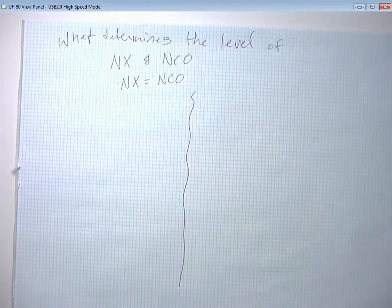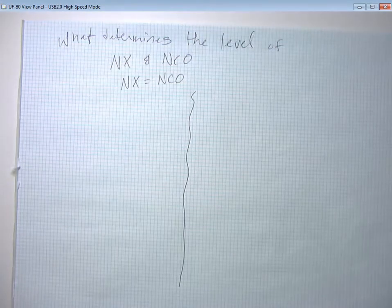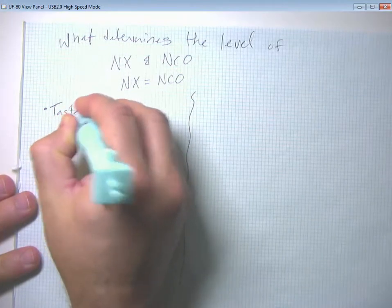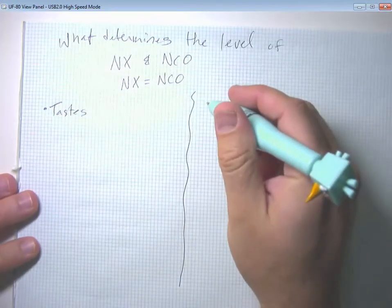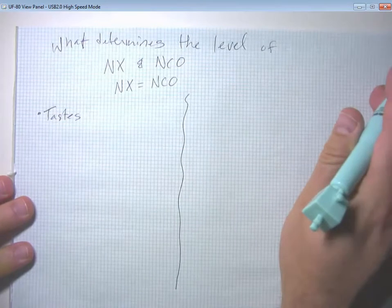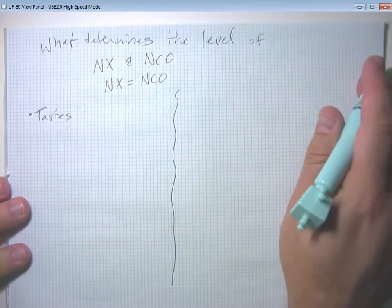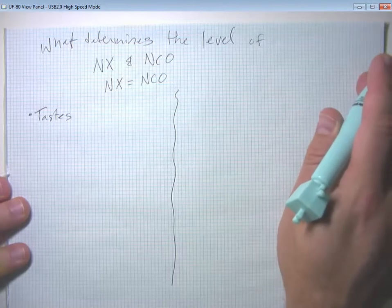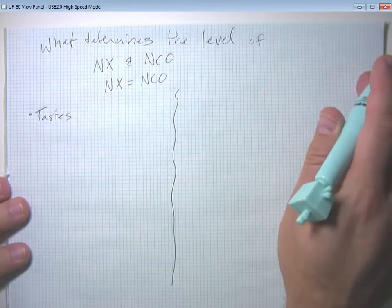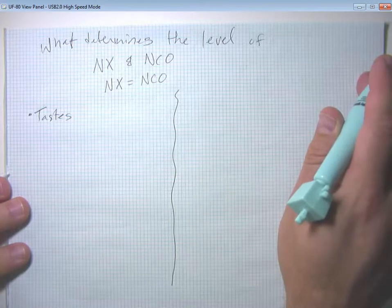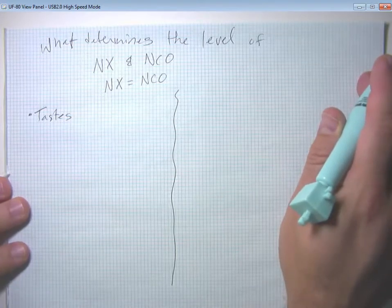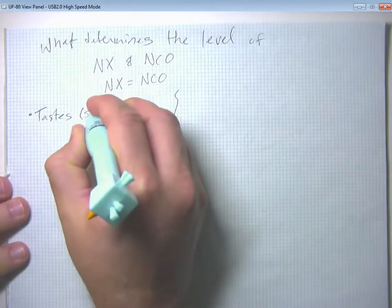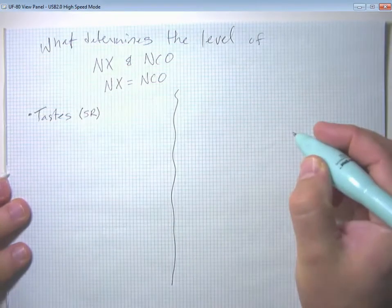So if we're going to look at the net export side, in the short run, something like tastes or fads or fashions can influence the level of a country's net exports. So if there's a boom for the type of coffee grown in Indonesia, that's going to help net exports in Indonesia and hurt net exports in Brazil as people reorient from one type of coffee to another. In the long run, these things aren't super important in determining the level of net exports from a country.